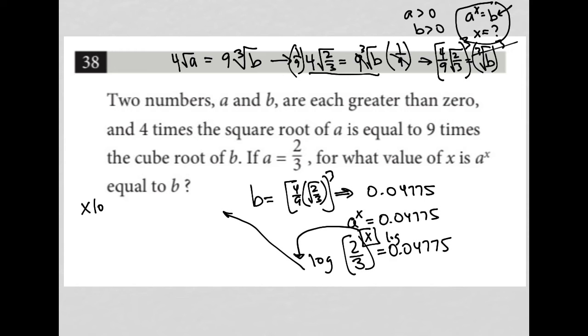So, I'd have X log two-thirds equals log of 0.04775. I can then divide both sides of my equation by the log of two-thirds. That cancels that out on that side. I have X equals. And again, I have to go to my calculator to solve this.